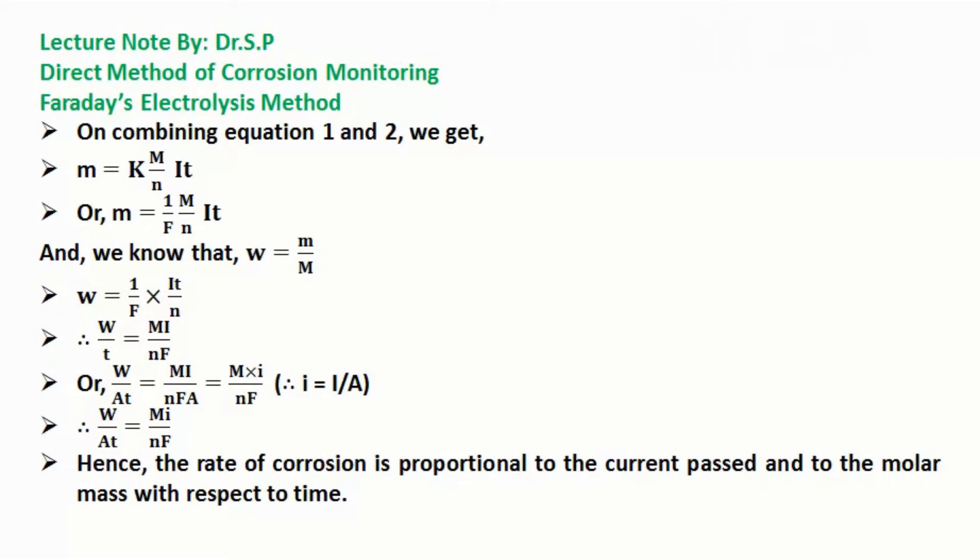W by AT equals MI by NFA, which simplifies to W by AT equals MI by NF. Hence, the rate of corrosion is proportional to the current passed and to the molar mass with respect to time. By using this equation, weight loss in corrosion per area can be determined.